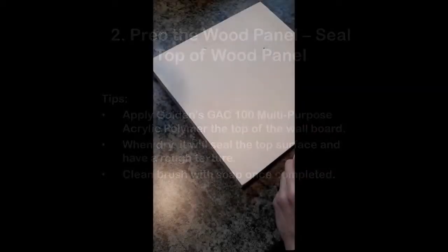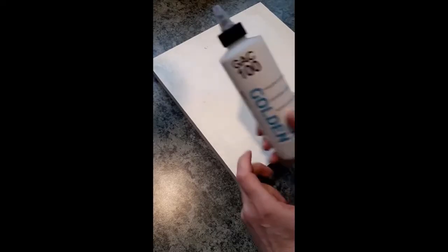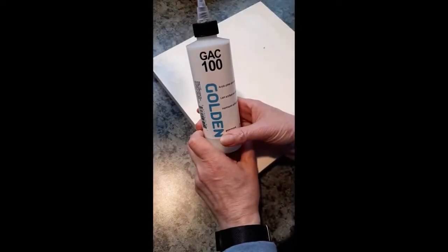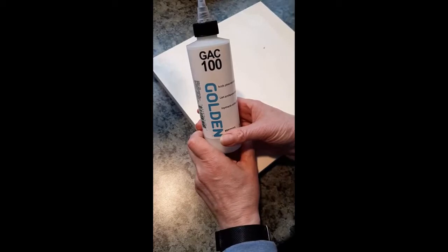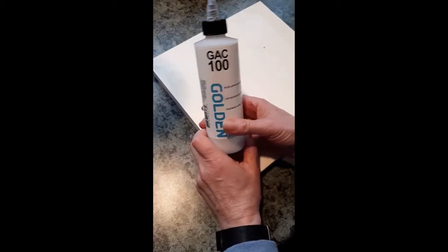Once your board is sanded, you're ready to prepare the wood panel. I use a product made by Golden. It's called GAK 100 and it's going to seal the wood panel and prepare it for the following glues and applications.